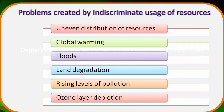Next are the problems created by indiscriminate use of resources. When we use resources randomly without systematic planning, the resources get exploited — this is called indiscriminate use of resources. It can have the following consequences: uneven distribution of resources, global warming, floods, land degradation, rising levels of pollution, and ozone layer depletion.